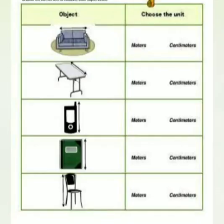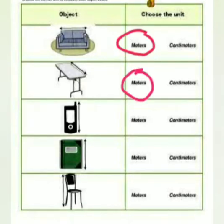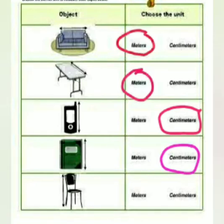So let's take a look at this. Is the sofa measured by centimetres or metres? Metres. How about the table? Metres. What about your phone? Centimetres. How about a book? Centimetres. A chair? By metres.